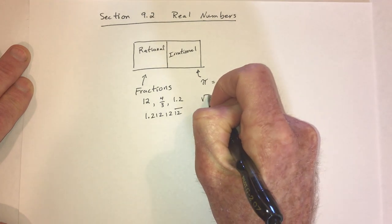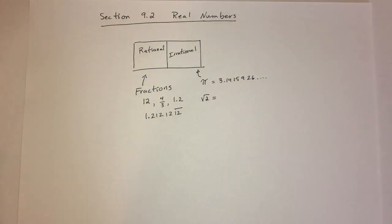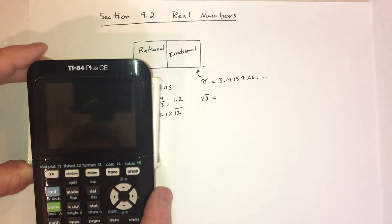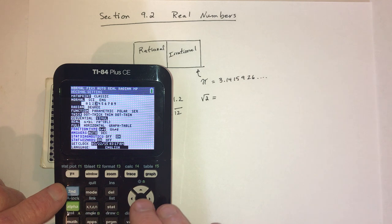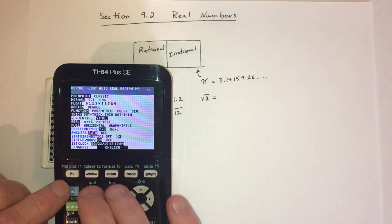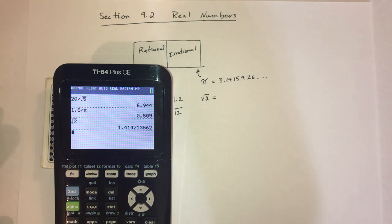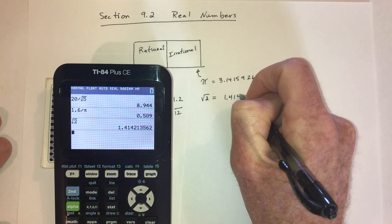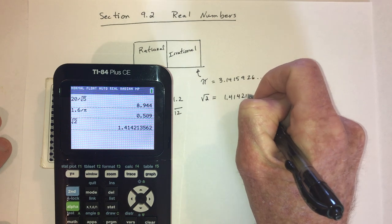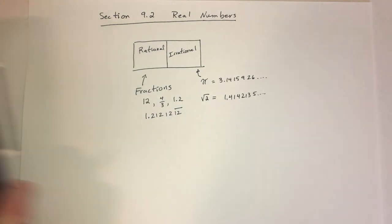Also, if you take square roots — for example, the square root of 2 — it comes out to 1.4142135, etc. That's an irrational number.